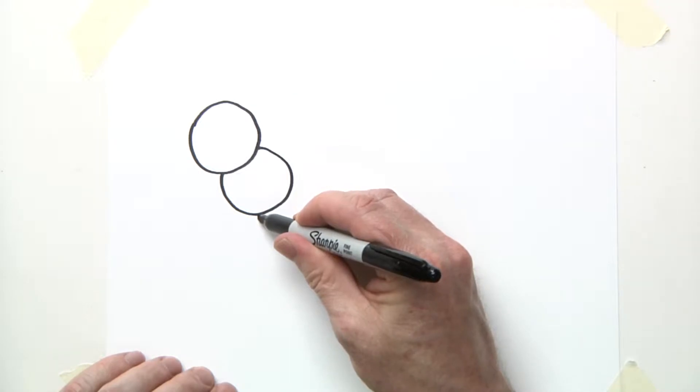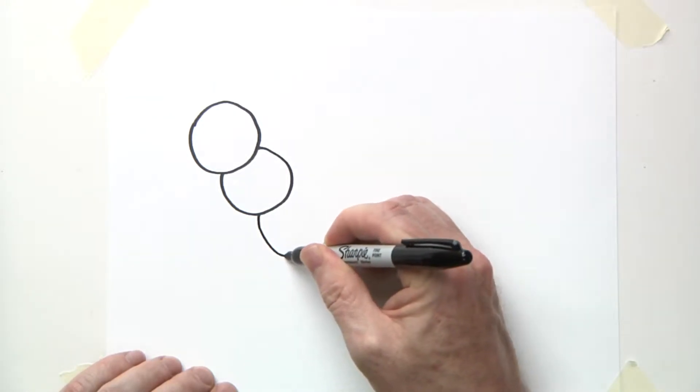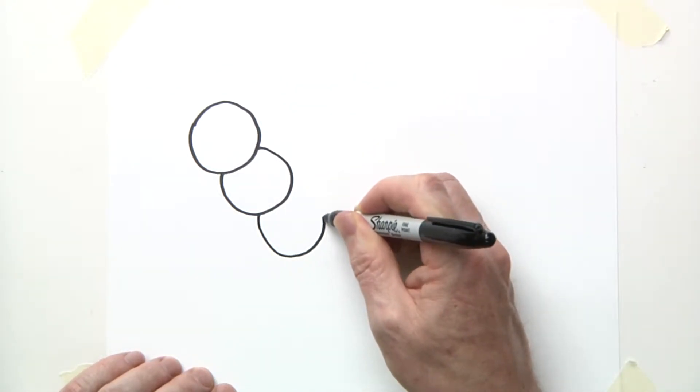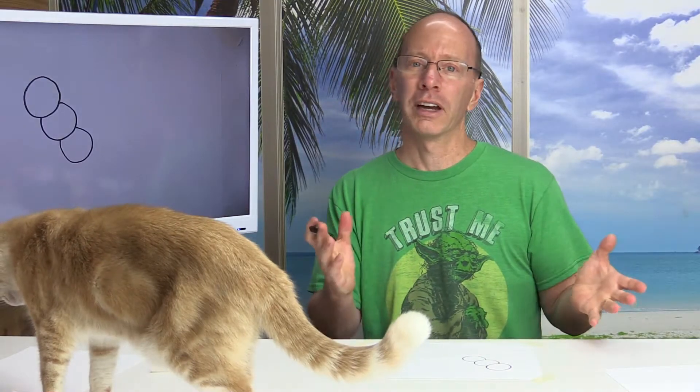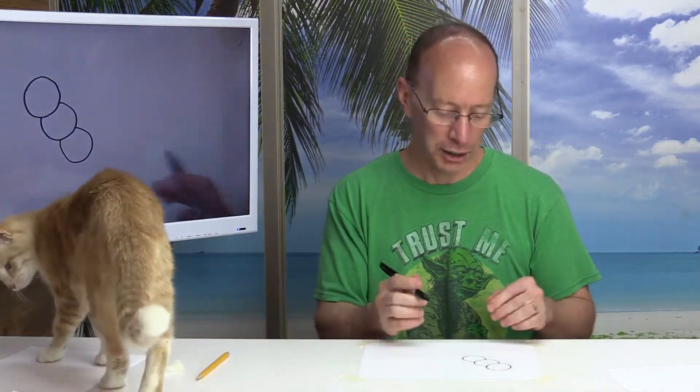So now I'm going to draw another one here, part of the millipede. Just another circle like that. And the circles don't have to be completely round. You're just trying your best.